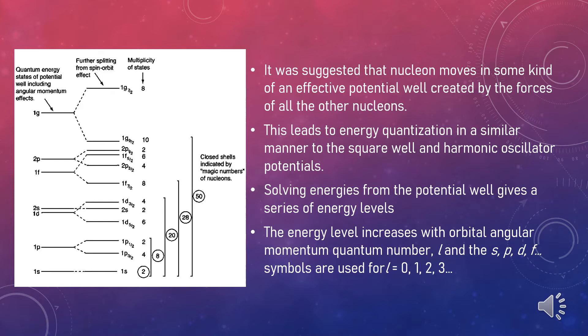Solving for the energies from such potentials gives a series of energy levels like the diagram I've shown on the left. The labels on the levels are somewhat different from the corresponding symbols for atomic energy levels. The energy levels increase with orbital angular momentum quantum number, which is denoted as L, and the SPDF symbols are used for L that equals to 0, 1, 2, 3, and so on, just like the atomic case.